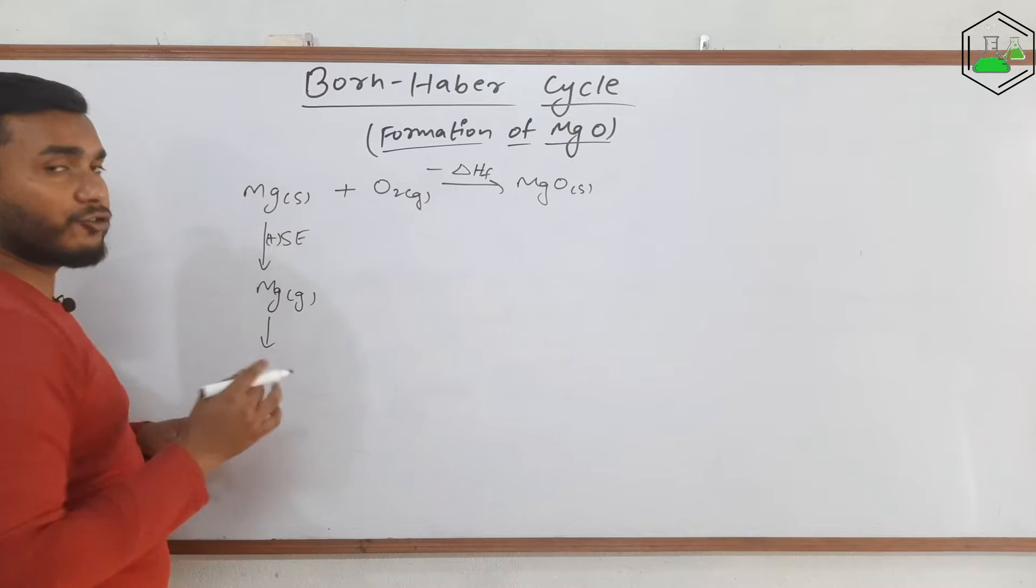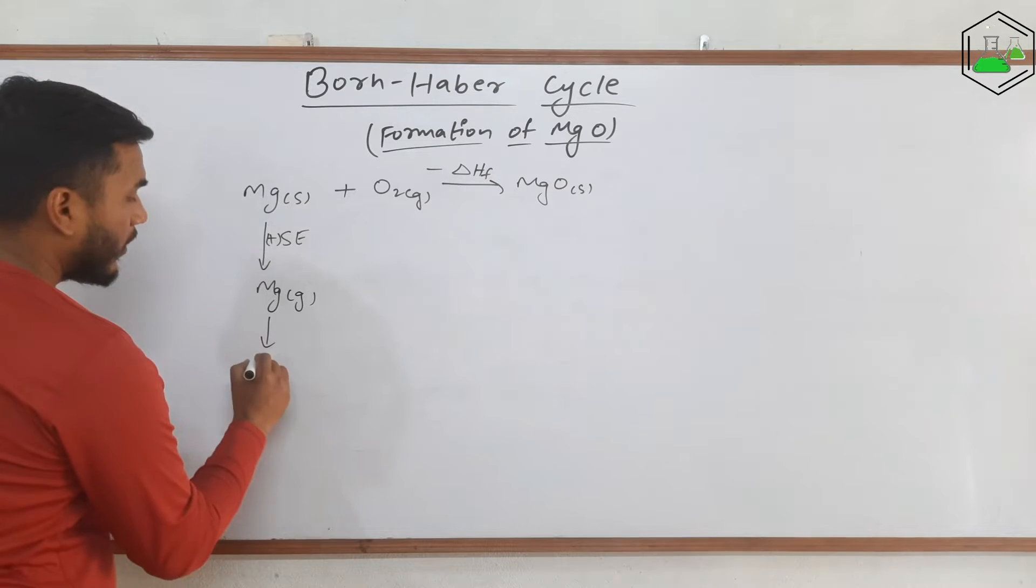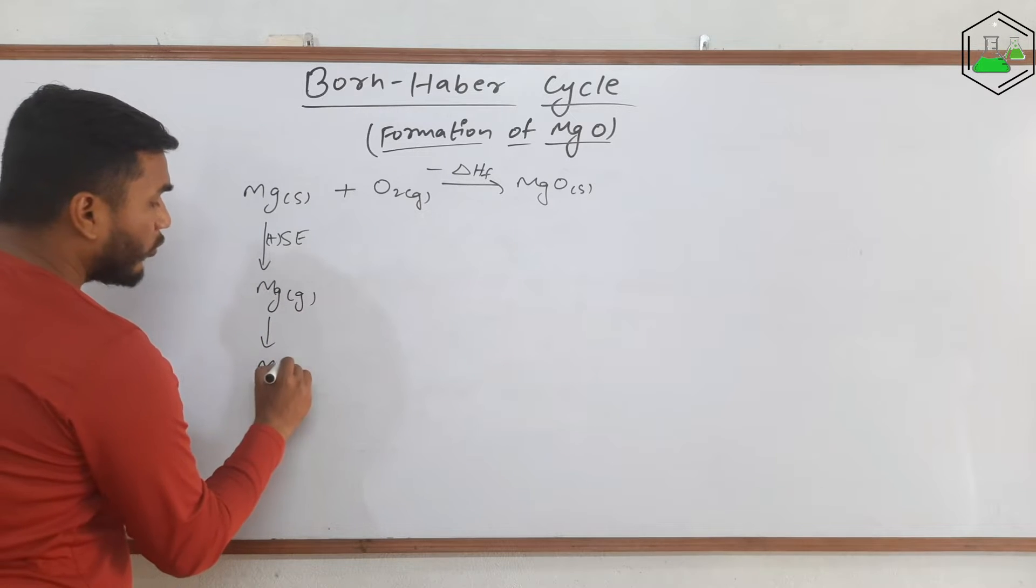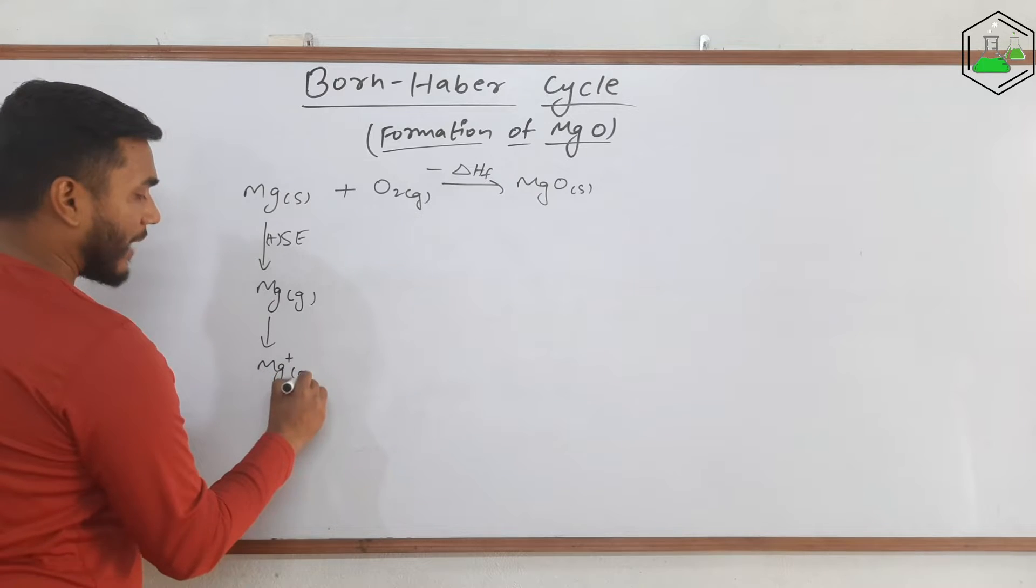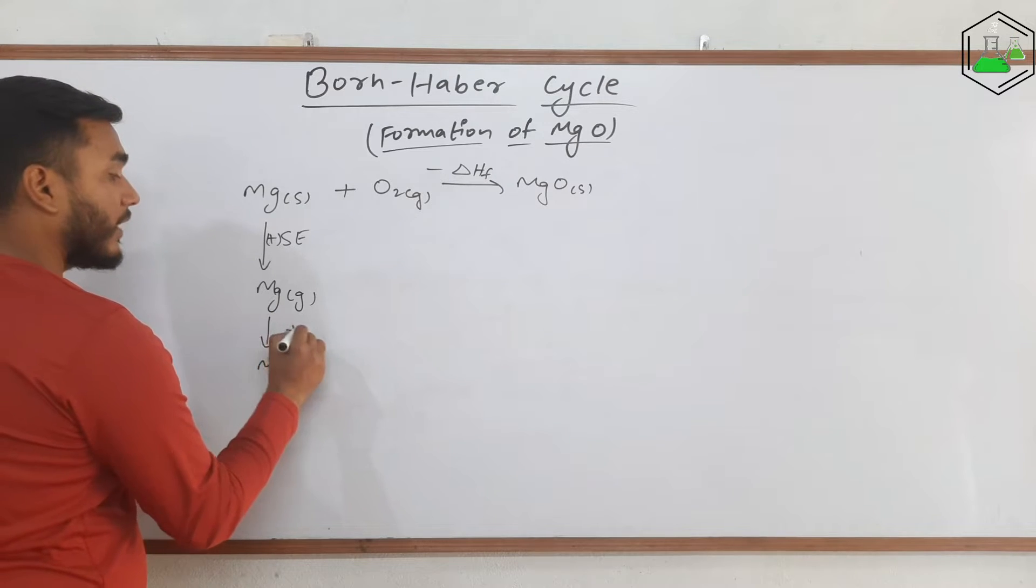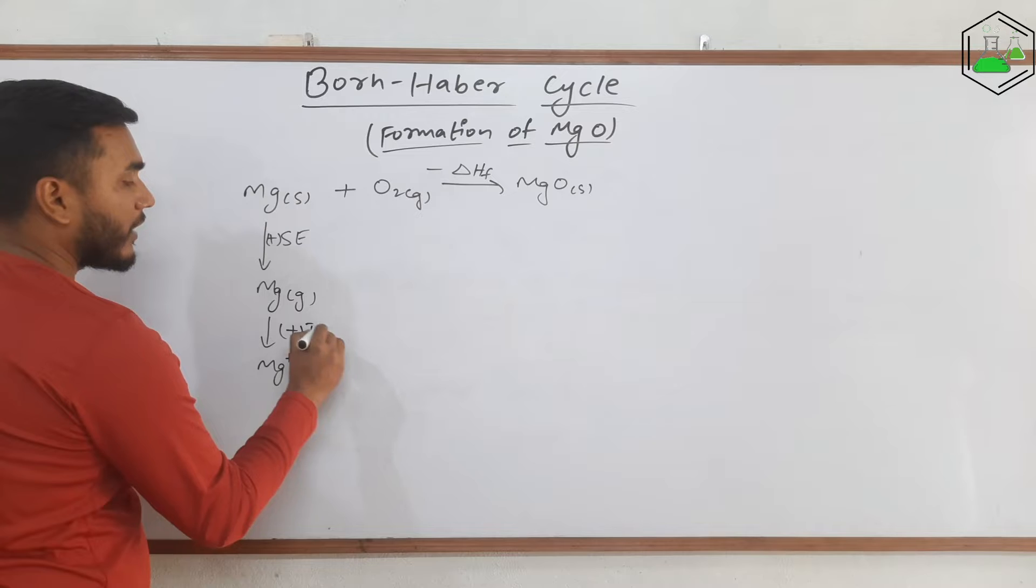Now again, this magnesium needs to convert into the ionic form. So it will lose one electron to convert into Mg+ and for that it will need some energy that is ionization energy 1.